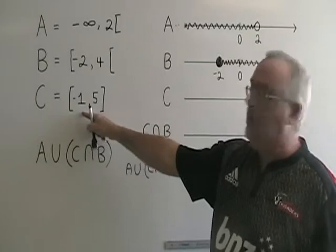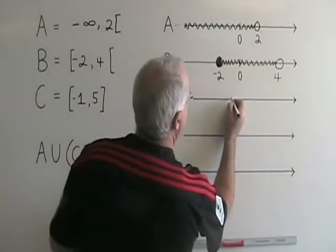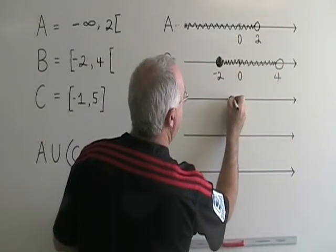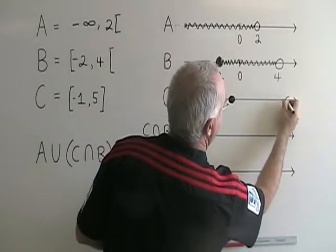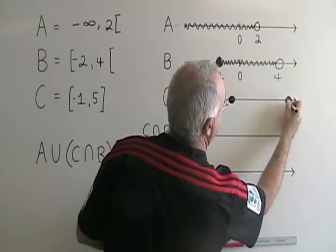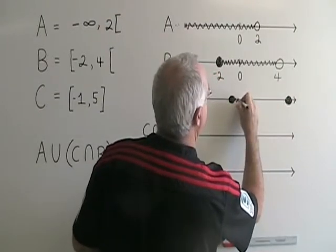It is from negative one included to five included. So, at negative one, I need a solid circle. At five, I need a solid circle. And I am shading in between them.